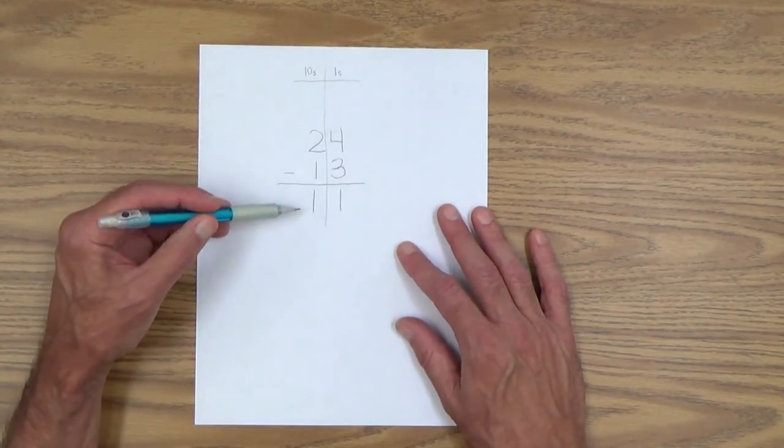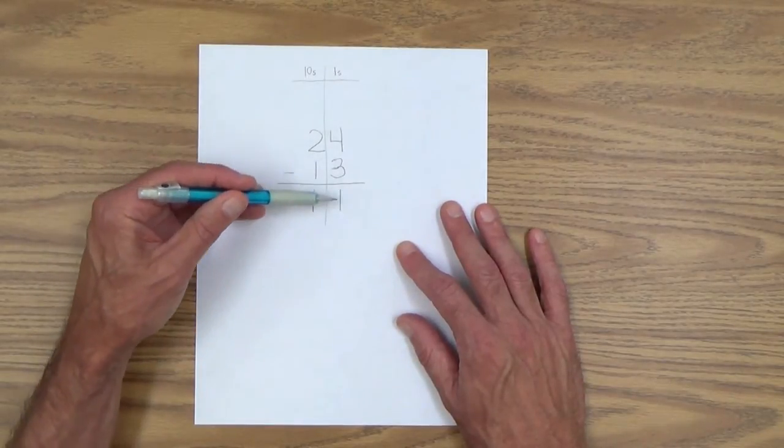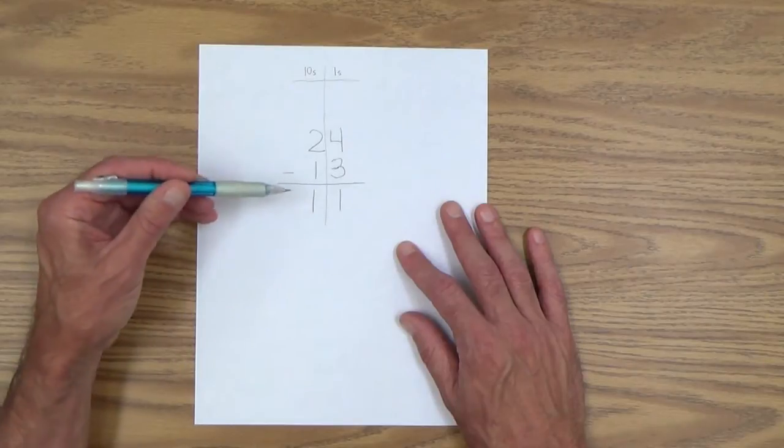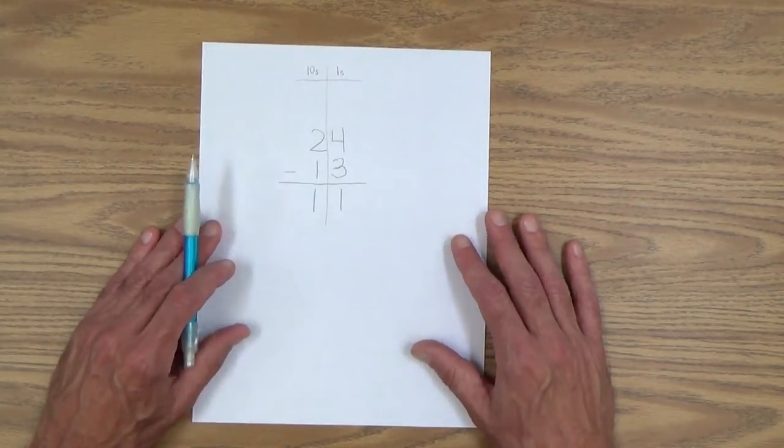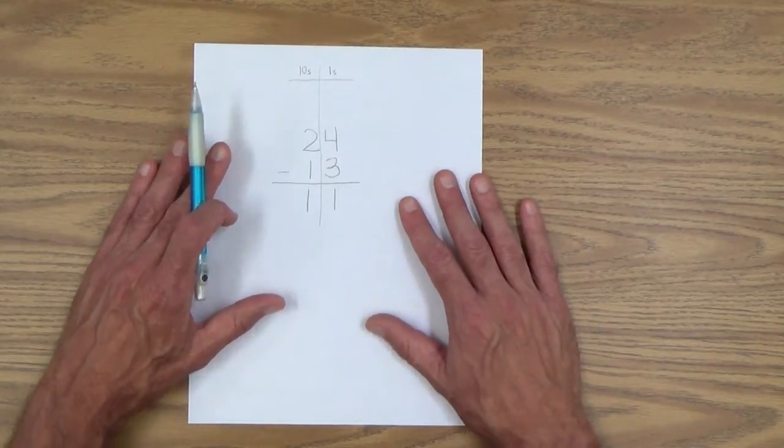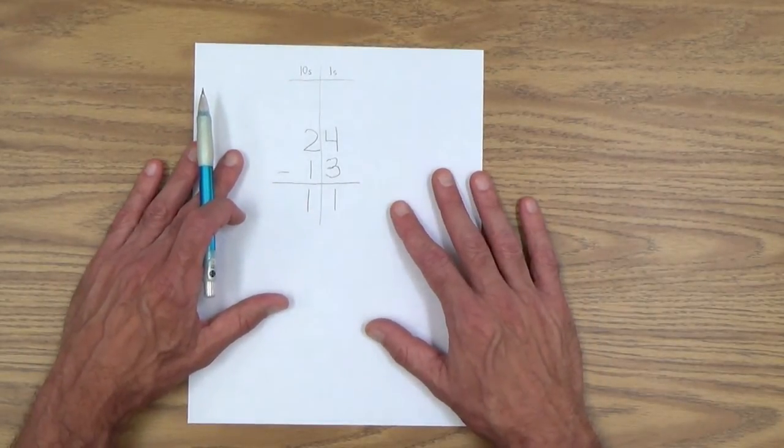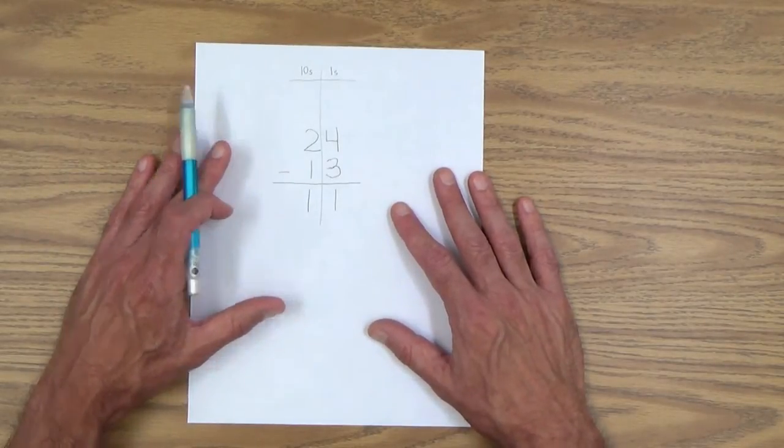And you want to point out, of course, that 11 is one ten and one one. So it's very important to say those things, because it's really now with these bigger numbers. It's all about place value and understanding place value.